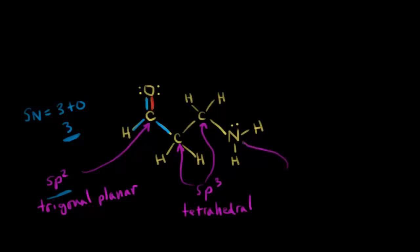Let's finally look at this nitrogen. To find the hybridization state, I'll use steric number. Steric number equals number of sigma bonds: here's one sigma bond, here's another, and here's another — three sigma bonds. Plus one lone pair of electrons. Three plus one gives four. A steric number of four means I need four hybridized orbitals, which corresponds to sp3 hybridization. So this nitrogen is sp3 hybridized.